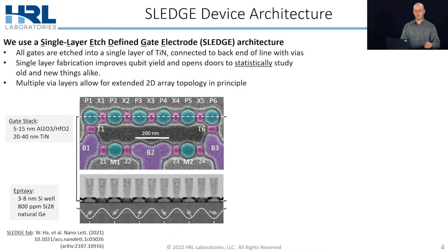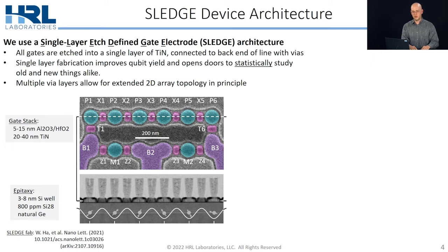So the SLEDGE device architecture is how we actually implement this. SLEDGE stands for single layer etch-defined gate electrode. As the name suggests, it is a process where we etch all of the surface gates into a blanket layer of titanium nitride.